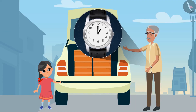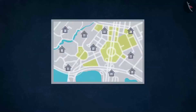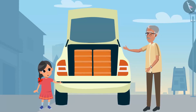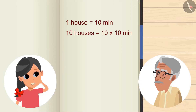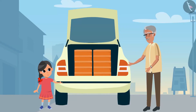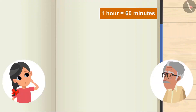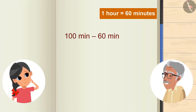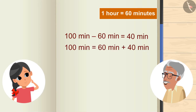Grandpa, how much time will each house take? Nearly 10 minutes. And we have to go to 10 houses, so 10 houses with 10 minutes each means 10 multiplied by 10 — it will take 100 minutes. Do you know how many hours are in 100 minutes? 1 hour has 60 minutes. If we subtract 60 from 100 minutes, we are left with 40 minutes. So 100 minutes means 1 hour and 40 minutes.